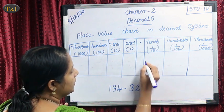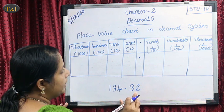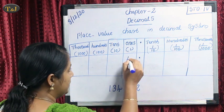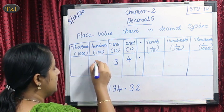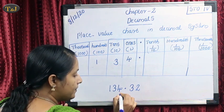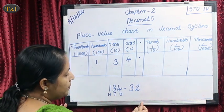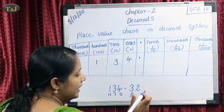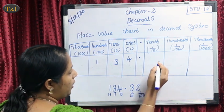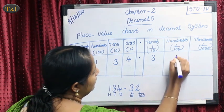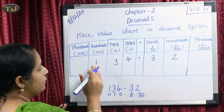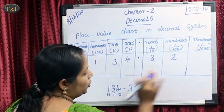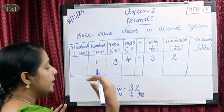First identify the point. After the point the digits are 3 and 2; before the point the digits are 4, 3, 1. So 4 is in the 1's place, 3 is in the 10's place, and 1 is in the 100's place. After the point, first place is tenths so 3 is in the tenths place, and second place is hundredths so 2 is in the hundredths place. Our number is 134.32.